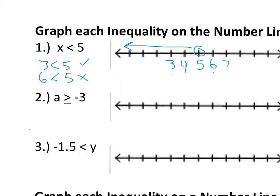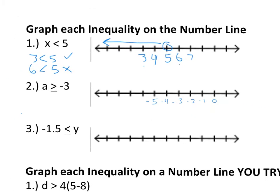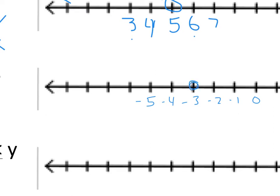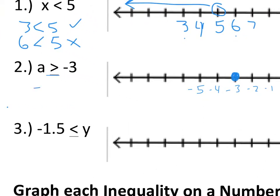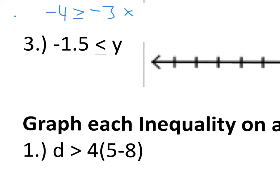For number two: put a dot at negative 3. Be careful with negatives — it goes negative two, negative one, zero; negative four is to the other side. This has a line underneath, so we're including negative 3 — fill the dot in. The inequality says a is greater than or equal to negative 3, so test negative 2 and negative 4. Negative 2 is greater than negative 3, so the ray goes right.